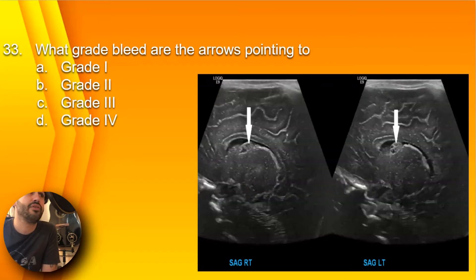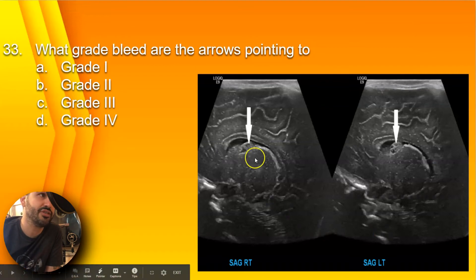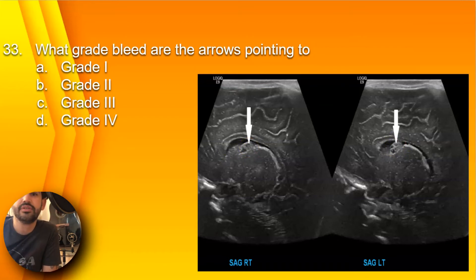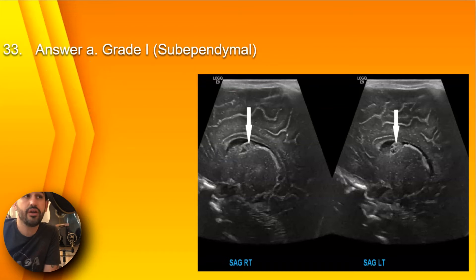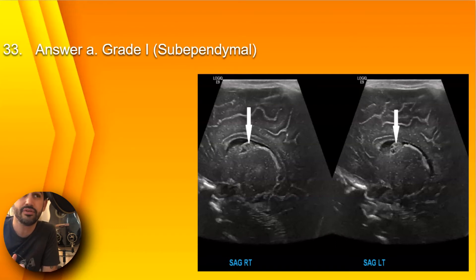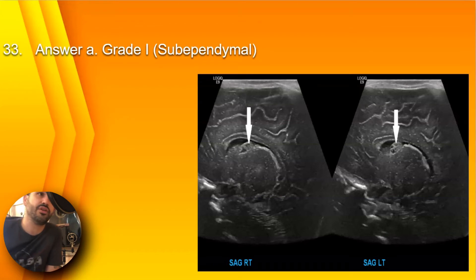Question 33: What grade bleed are the arrows pointing to? Here you have sagittal right, parasagittal right and left, and the caudal thalamic grooves. These echogenic structures are bleeds. Are they grade 1, grade 2, grade 3, or grade 4? The answer is A, grade 1 or sub-ependymal. Grade 1 stays at the level of the sub-ependymal area or germinal matrix. Grade 2 is when it breaks in and hemorrhages into the lateral ventricles without ventricular dilatation. Grade 3 is intraventricular blood with ventricular dilatation. Grade 4 is blood anywhere in the parenchyma.